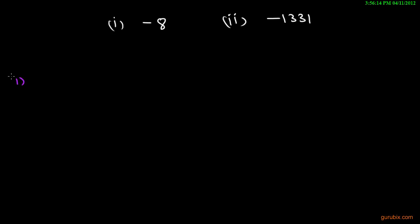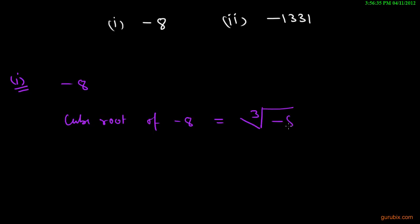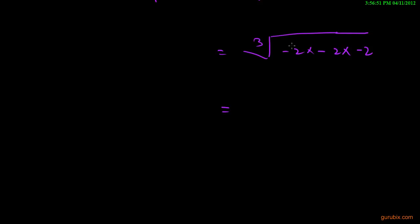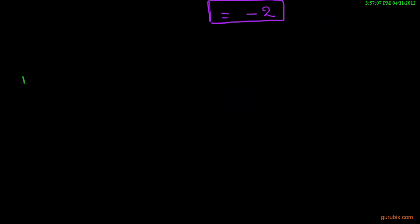Let us start solving the example with part one. In part one we are given the number negative eight and we have to find its cube root. We can write negative eight as minus two times minus two times minus two, and taking out one factor of this triple gives us negative two. So the cube root of negative eight is negative two.